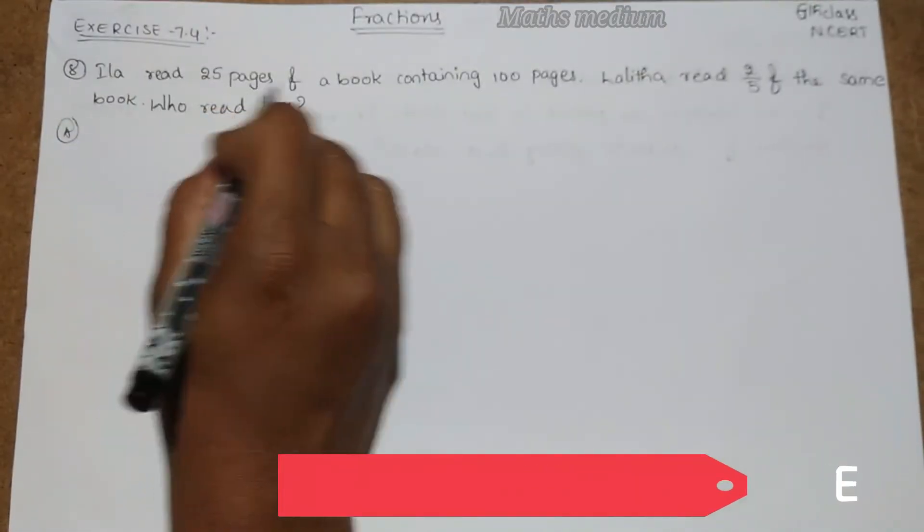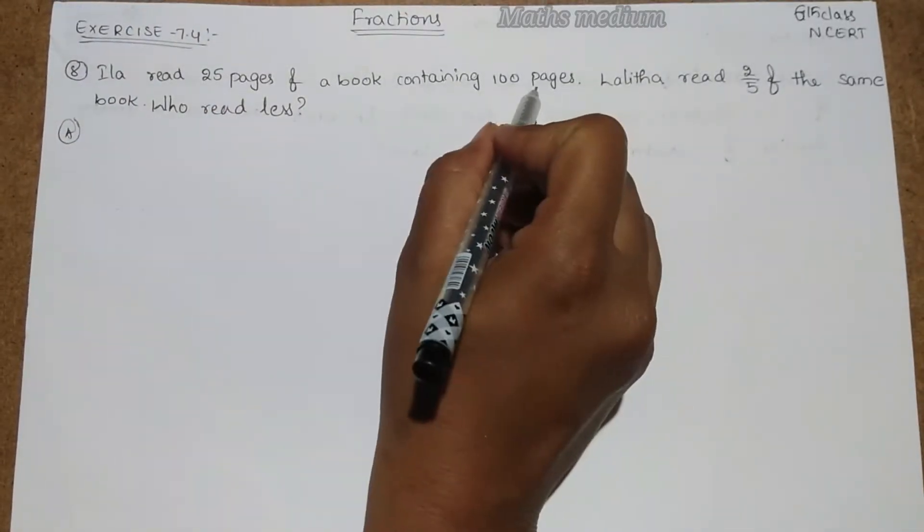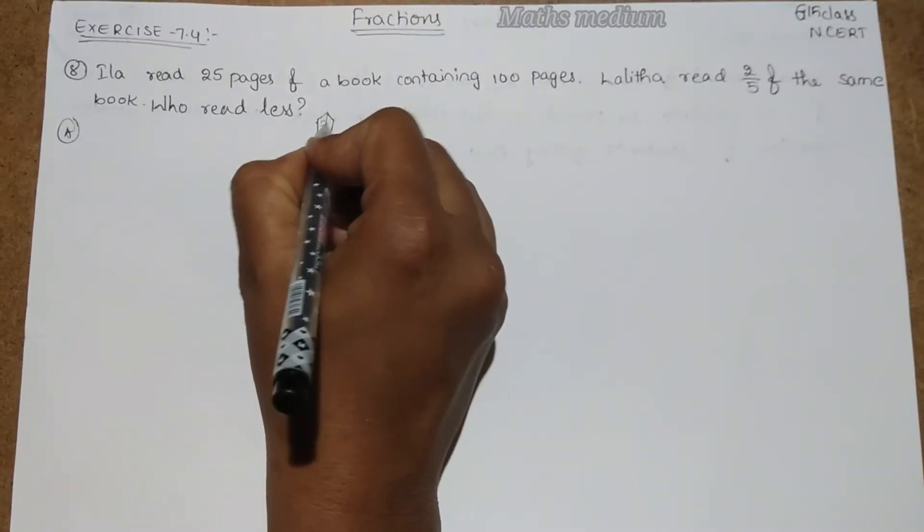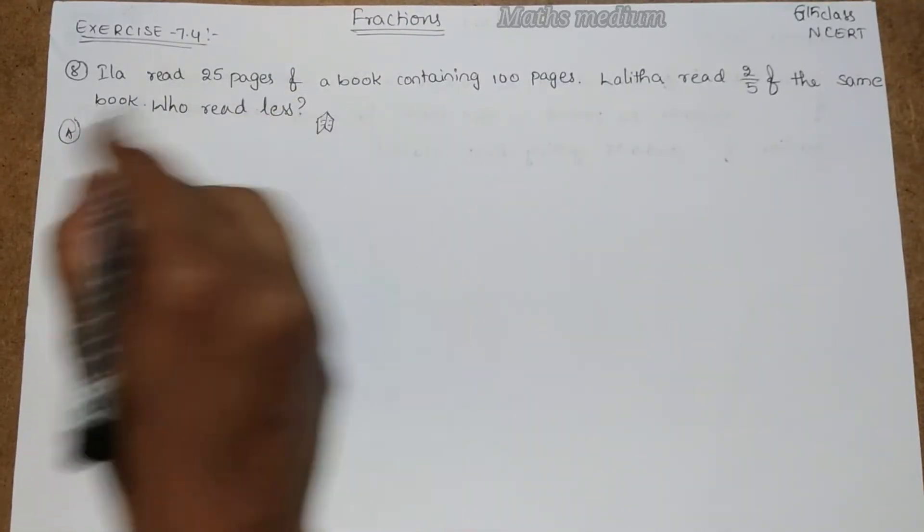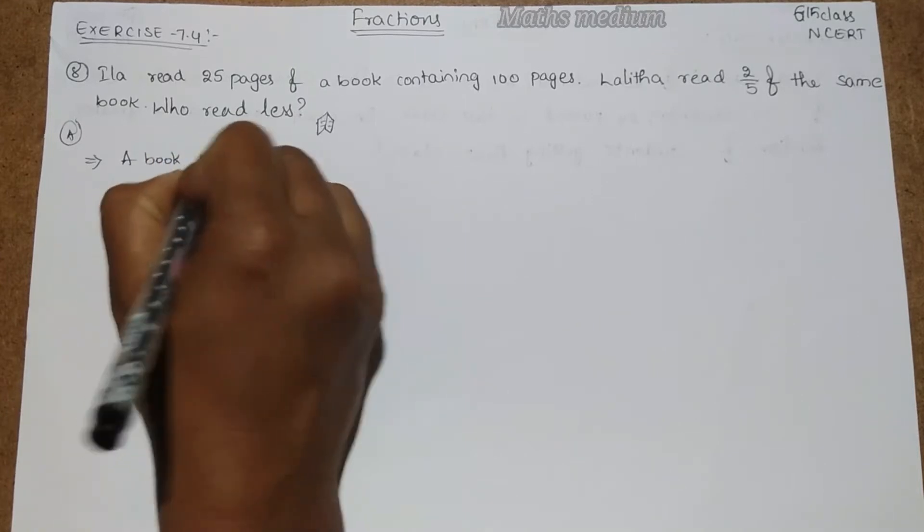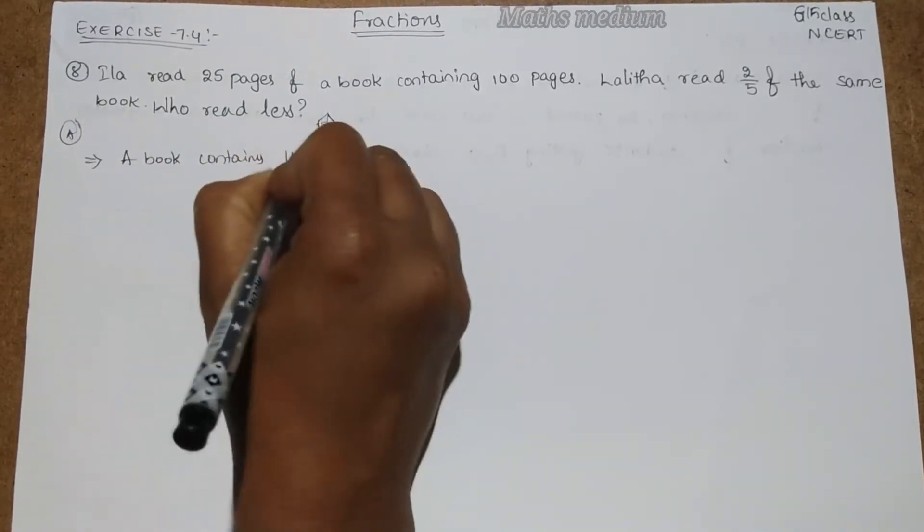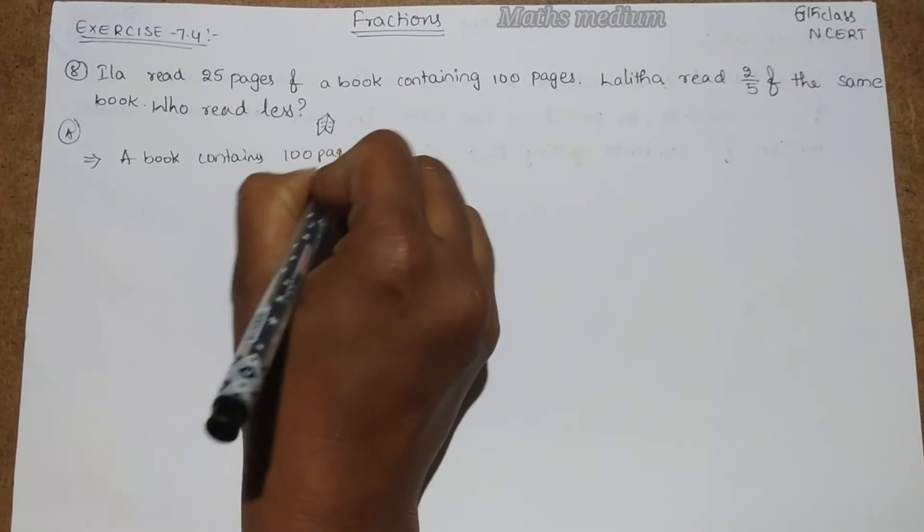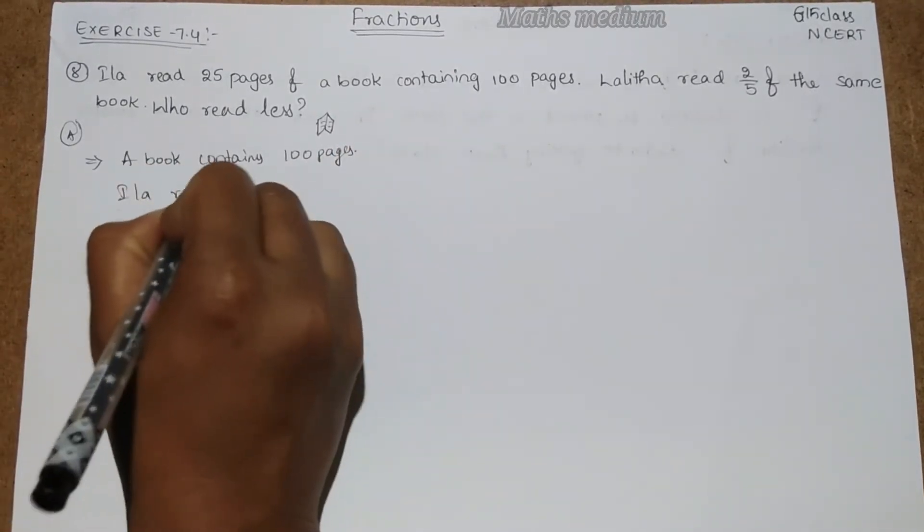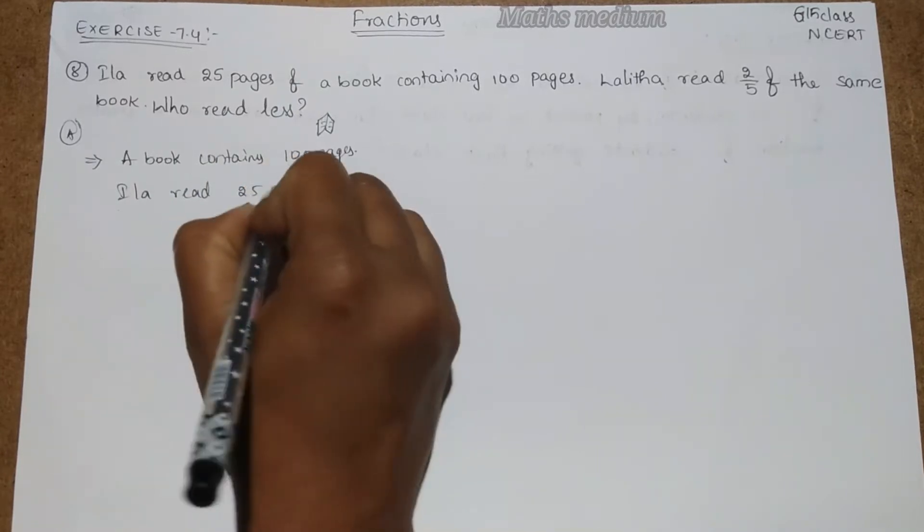So here Ilar reads 25 pages of book containing 100 pages. So if you take a book that contains 100 pages, Ilar reads 25 pages. So let's take the step as: a book contains 100 pages. In that, Ilar reads 25 pages.